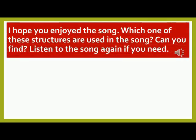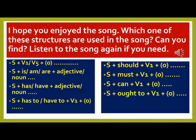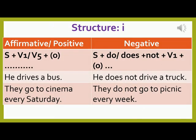I hope you enjoyed the song. Which one of these structures are used in the song? Can you find? Listen to the song again if you need. Now let's begin from Structure 1 — Affirmative or Positive. The structure is: Subject + V1 or V5 + Object. Note that object is in brackets because sometimes there is no object in a sentence. In the song, there are two sentences in this structure: 'I know my duties and rights' and 'I love my youngsters.'